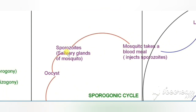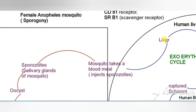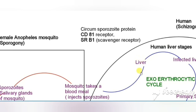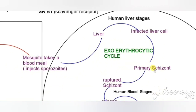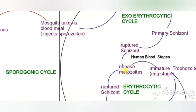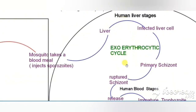The infected mosquito has sporozoites in its salivary glands. When an infected mosquito bites a susceptible individual, it injects the sporozoites into the skin. These sporozoites travel through the dermal tissues and reach the blood. From the blood, they reach the liver. In the liver, they bind to hepatocytes via specific receptors. The sporozoites have circumsporozoite protein and bind to the CD81 receptor along with the co-receptor SRB1, the scavenger receptor. The sporozoites infect the liver cells, mature into schizonts, rupture, and release merozoites. This is called the exoerythrocytic cycle, which occurs in the liver.